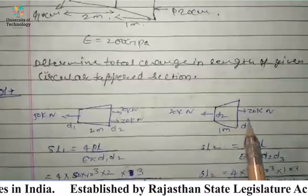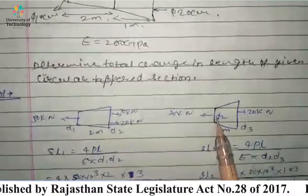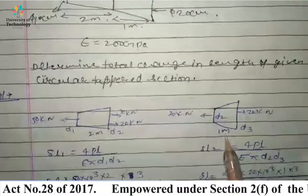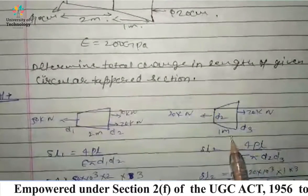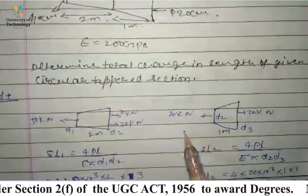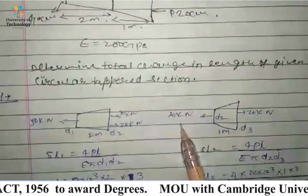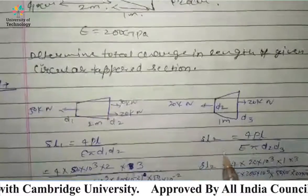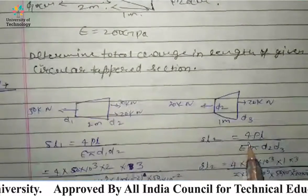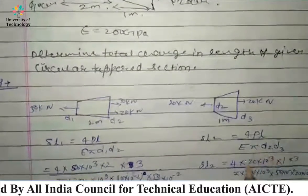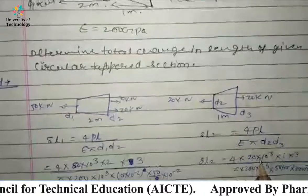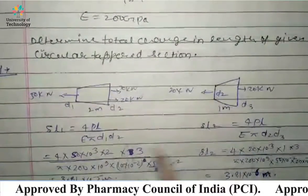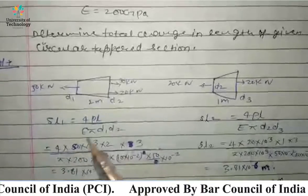For the other tapered section, the diameter is 20 cm, the load is 20 kN, and the length of this tapered section is 1 meter. The opposing load for this reaction is 20 kN. The formula is the same: ΔL2 = 4PL / (π·E·D2·D3). We then substitute all values into these formulas for ΔL1 and ΔL2.